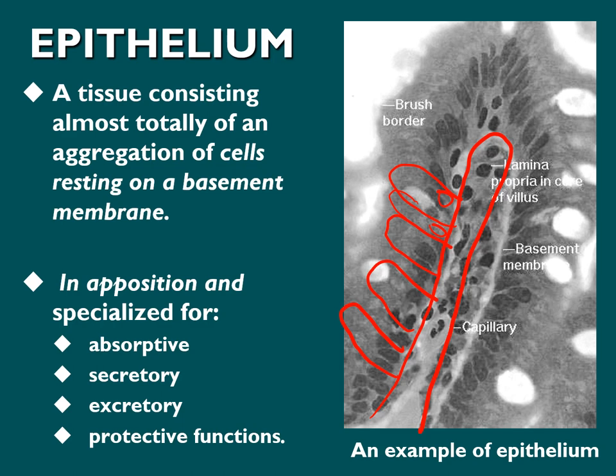The epithelium found in the small intestine is responsible for absorption. We have cells — for example, goblet cells found in the upper digestive system — responsible for producing mucus, which is very important for the protection of our airways. The kidneys consist of tubules, and these tubules are responsible for excretion of waste material outside our body.